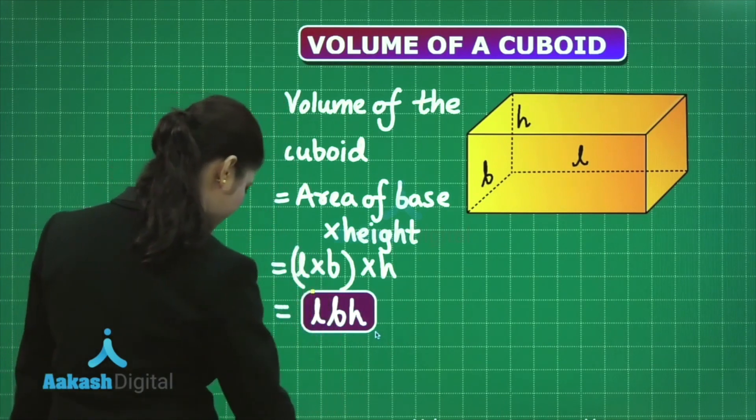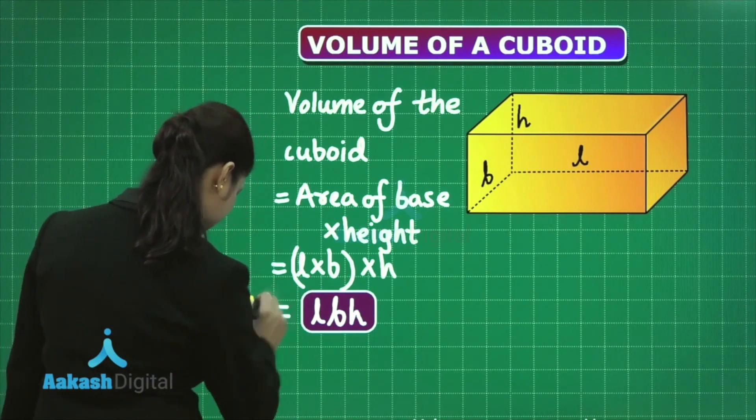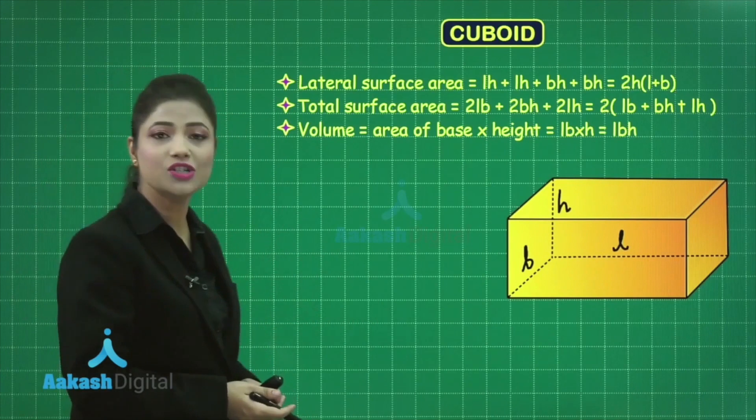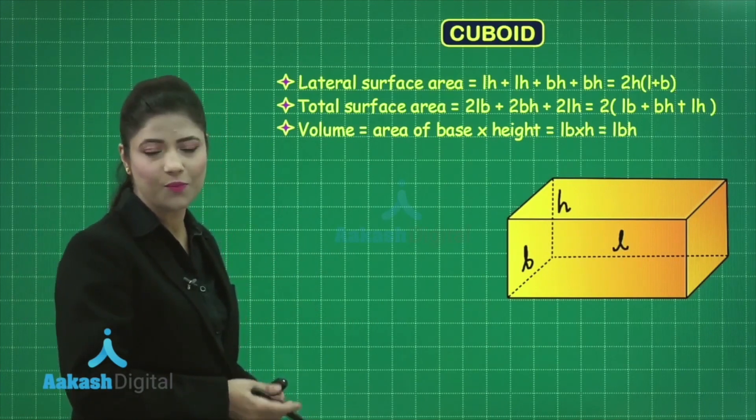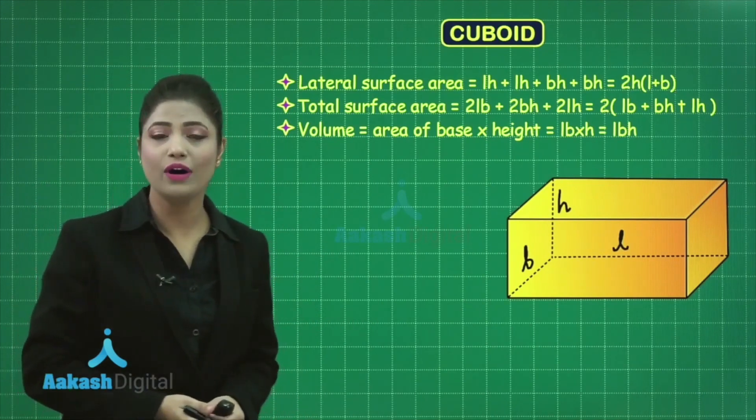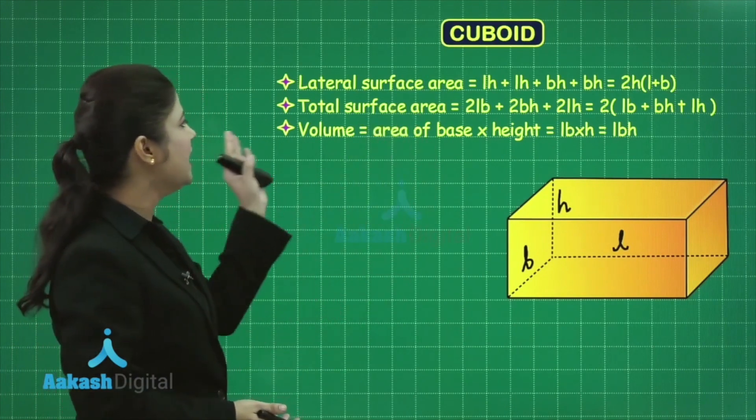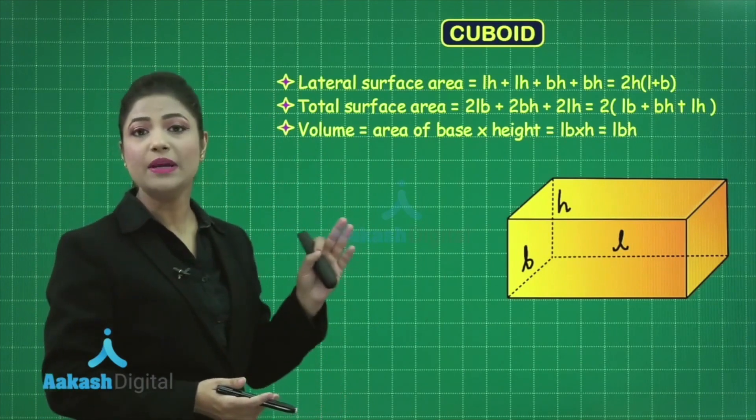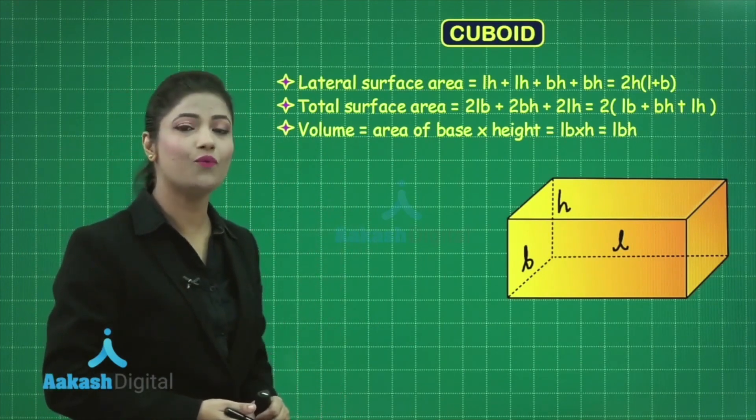These formulas are very helpful in solving questions related to surface area and volume. Lateral surface area of a cuboid is 2H(L+B). Total surface area equals 2(LB+BH+HL). Moreover, volume of the cuboid is given as LBH.